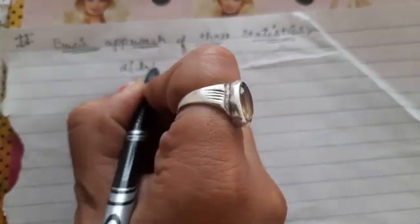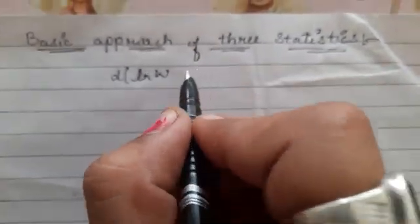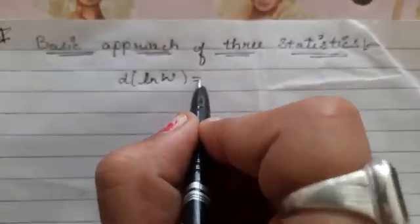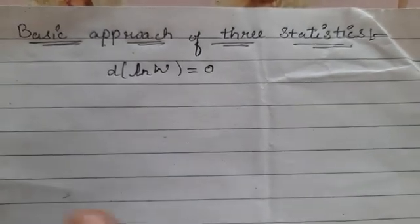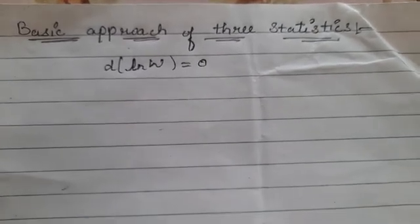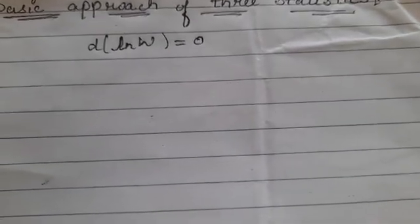For the most probable state, we write: d(log W) = 0. We deal with log W instead of W directly, since for the most probable state W is maximum, and therefore d(log W) = 0.